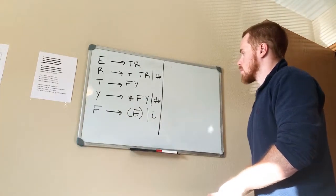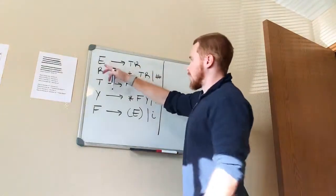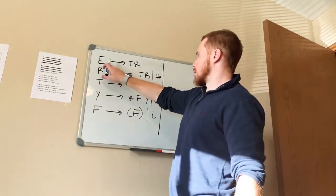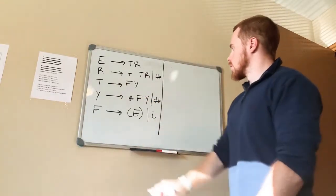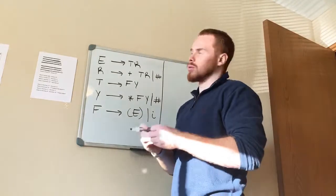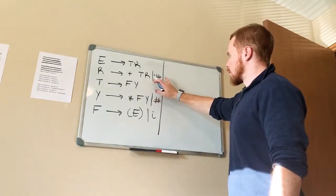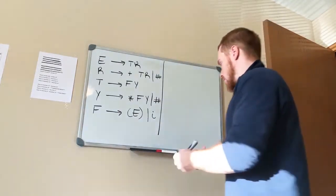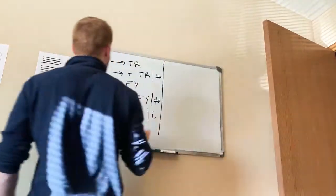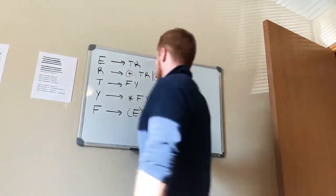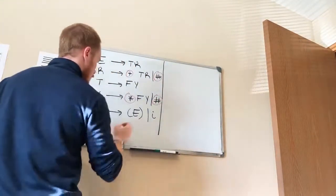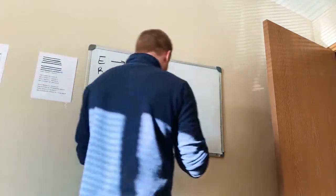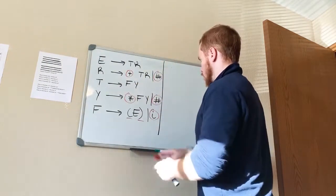We're going to find the first set of every non-terminal symbol. Non-terminal symbols are the ones on the left side of the rules. Terminal symbols are usually the characters of the language — things like the plus symbol, the multiplication sign, the number symbol, and parentheses are all terminal symbols. I'll highlight these and put them in red, underlining the parentheses since there's an open paren and a closed paren. The vertical bar means 'or.'